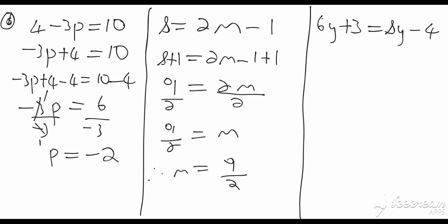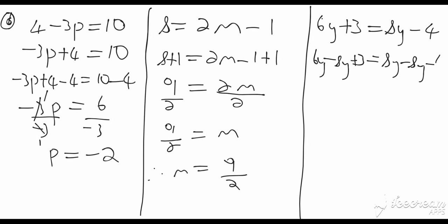The final question: six y plus three equals eight y minus four. Since we want to find y, we can't have it on both sides — we have to get it on one side. We can bring the eight y over to the left by subtracting it from both sides: six y minus eight y plus three equals eight y minus eight y minus four. Six y minus eight y gives negative two y, so we have negative two y plus three equals negative four.